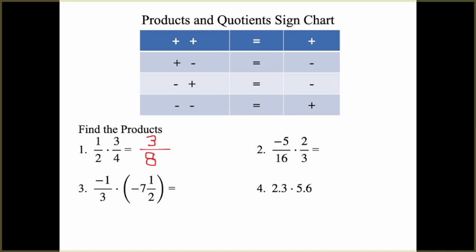For number 2, we do the same thing. We take negative 5 times 2 and get negative 10, then 16 times 3 gives us 48. But we are not done yet — whenever you have fractions, you must check if they are in simplest form. Negative 10 over 48 is not in simplest form. Both 10 and 48 are divisible by 2, so negative 10 divided by 2 is 5, and 48 divided by 2 is 24. Don't forget your negative sign — the answer is negative 5 twenty-fourths.